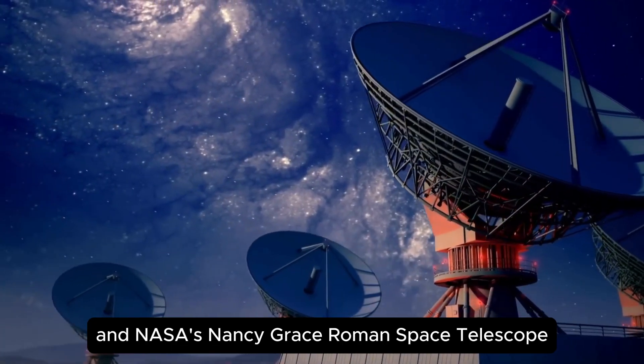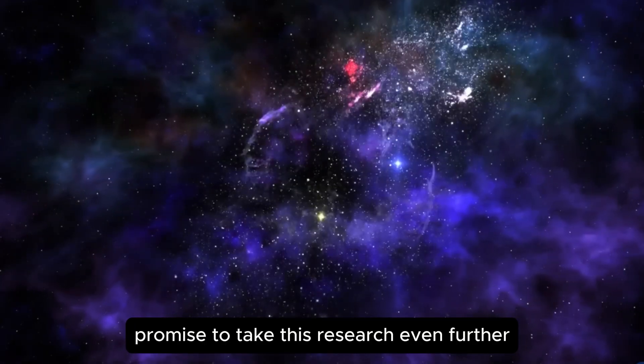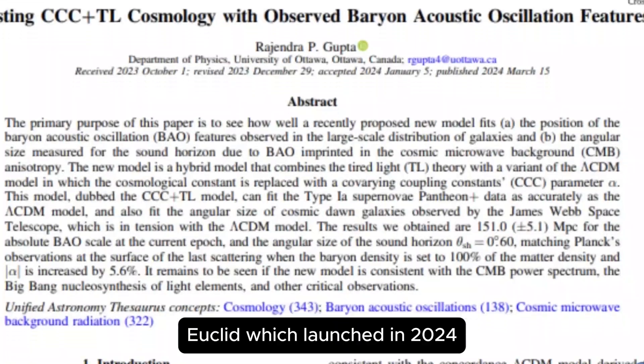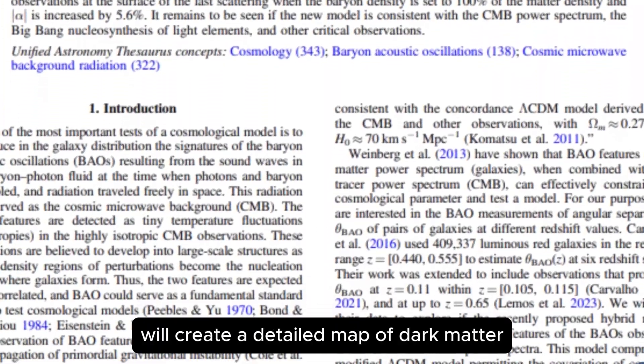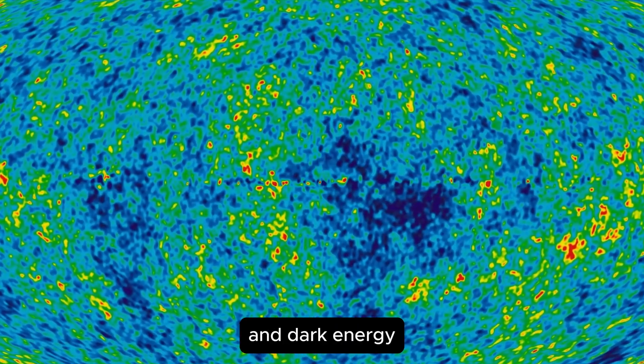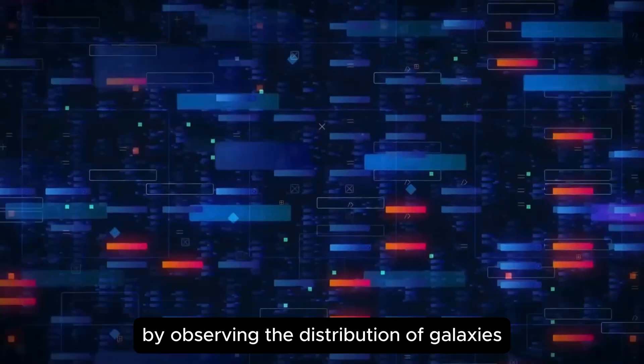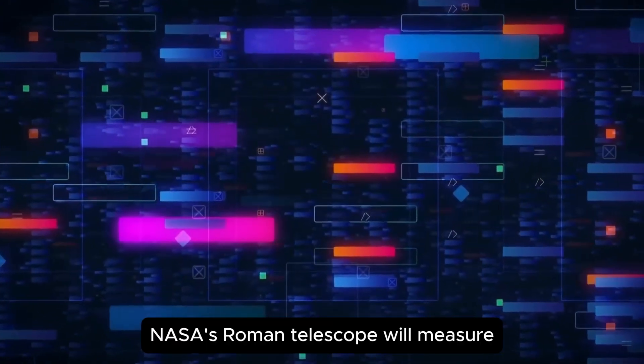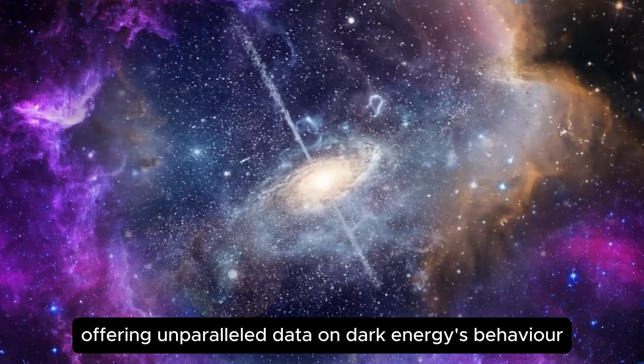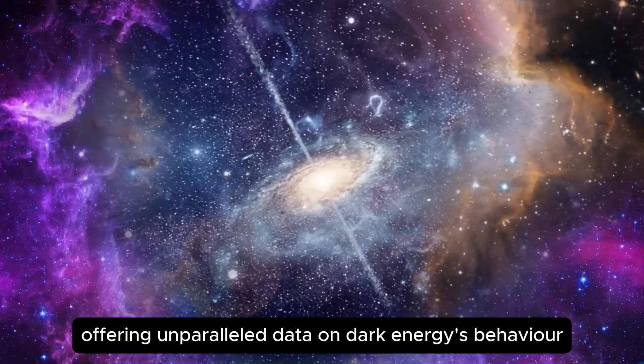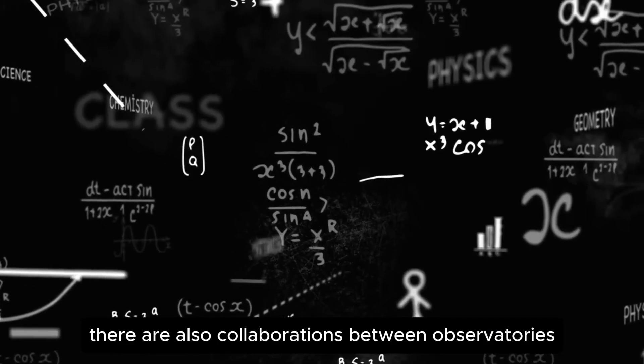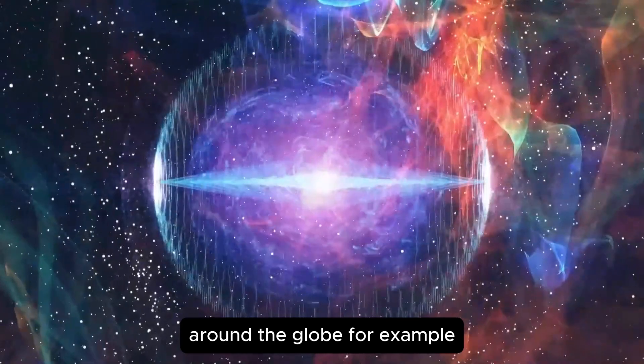Upcoming missions, such as the Euclid Space Telescope and NASA's Nancy Grace Roman Space Telescope, promise to take this research even further. Euclid, which launched in 2024, will create a detailed map of dark matter and dark energy by observing the distribution of galaxies and cosmic voids over a third of the sky. NASA's Roman telescope will measure over a billion galaxies, offering unparalleled data on dark energy's behavior over time.